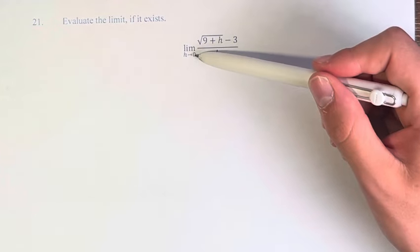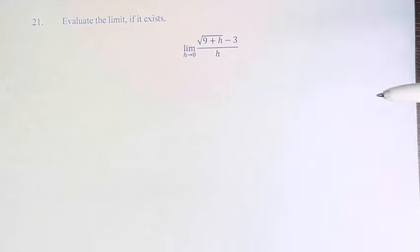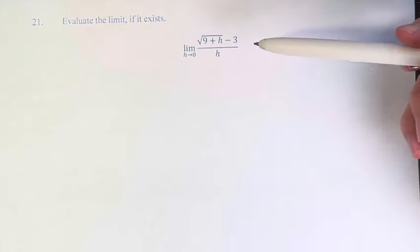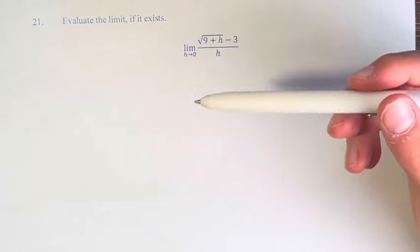We want to be able to plug in 0 directly into the limit, however we'd be dividing by 0. So what we have to do is alter or simplify this fraction in a way that makes it so we're not dividing by h.